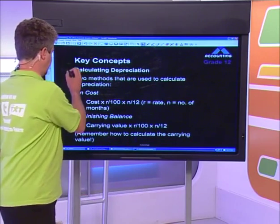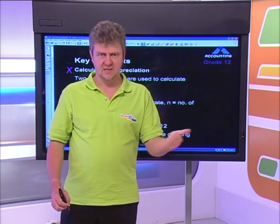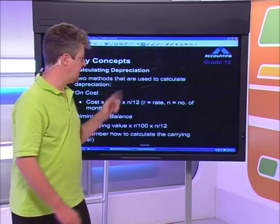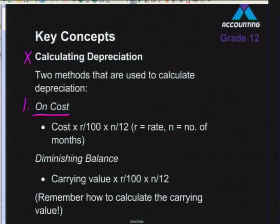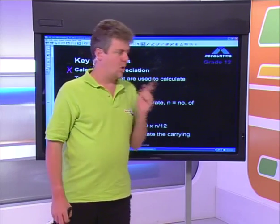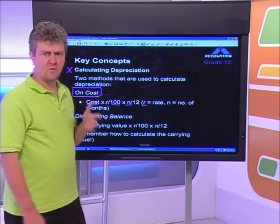We'll now move to the calculation of depreciation - revise this before your final exam as it appears in many different questions including adjustments, cash flow statements, and fixed asset questions. There are two methods. The first is depreciation on cost: take the cost price of the asset, multiply by the depreciation rate divided by 100, then multiply by the number of months and divide by 12. Depreciation is usually calculated at the end of the financial year or when you sell an asset.